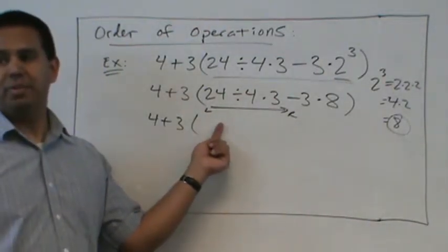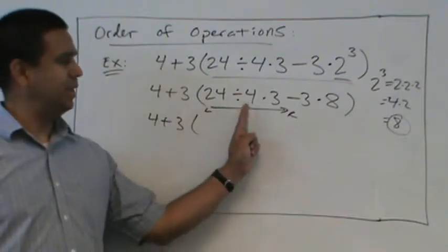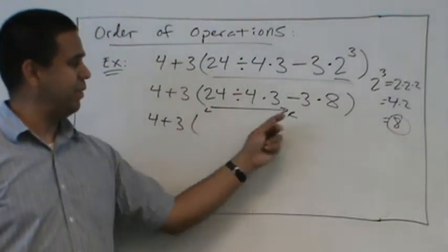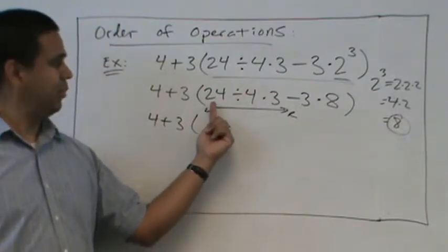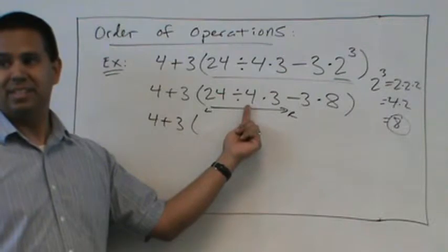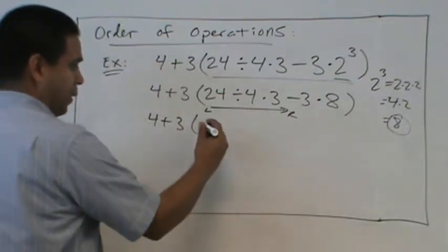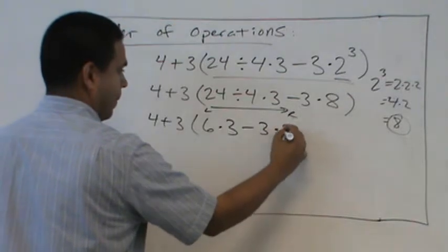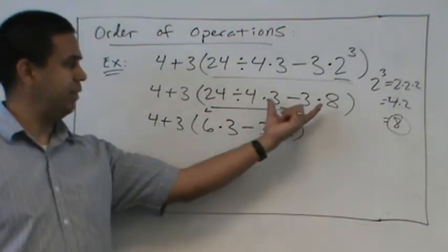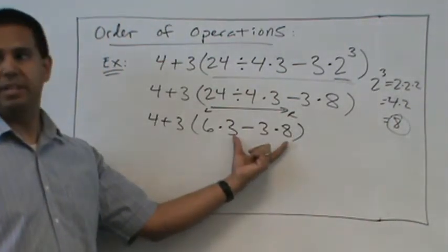Okay. Now the important part right here is, we've got to be careful. We're going in the parentheses. We're going left to right because we're dividing and multiplying. So 24 divided by 4 is 6. And everything else, just bring it down.